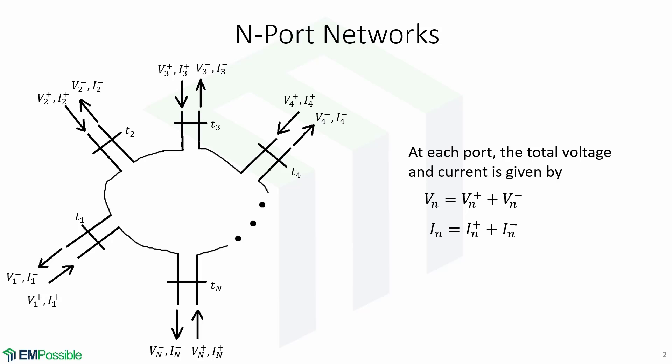In the previous lecture, we derived equivalent voltages and currents for different devices. Once such voltages and currents have been defined at various points on the microwave network, we can use impedance or admittance matrices of circuit theory that relate these terminal or port quantities to each other. By doing this, we are arriving at a matrix description of the network.